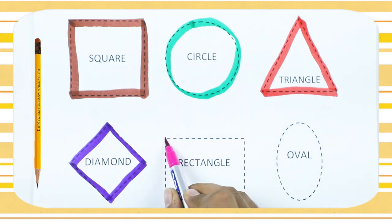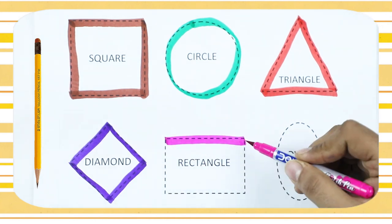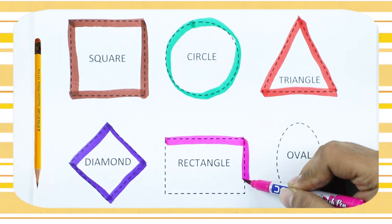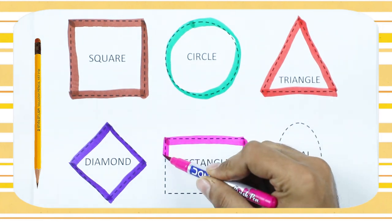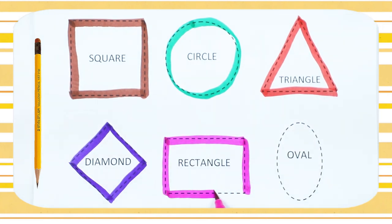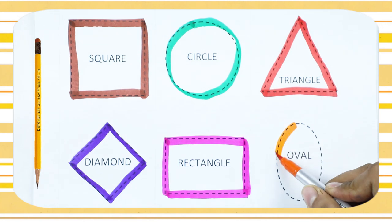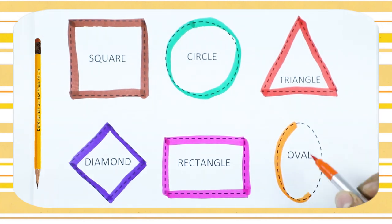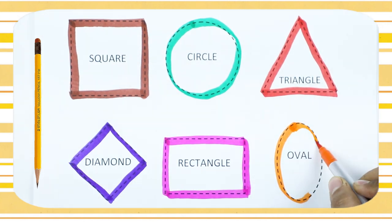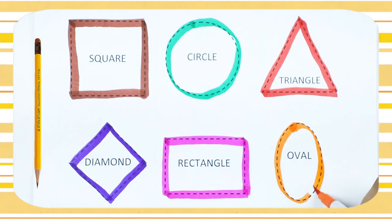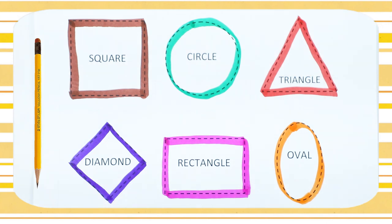Rectangle — we make a rectangle with pink color. It's a rectangle! We make an oval with orange color. It's an oval with orange color. Thank you for watching, please like and subscribe!